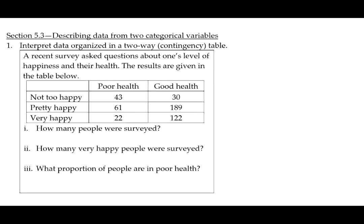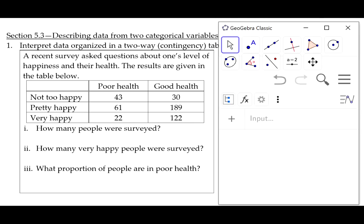Part one says, how many people were surveyed? We need to figure out the total number of people by adding up all the values in the different cells here. I brought up a little GeoGebra window and I'm going to add 43 plus 30 plus 61 plus 189 plus 22 plus 122, and I get 467. That's the total number of individuals that were included in the study.